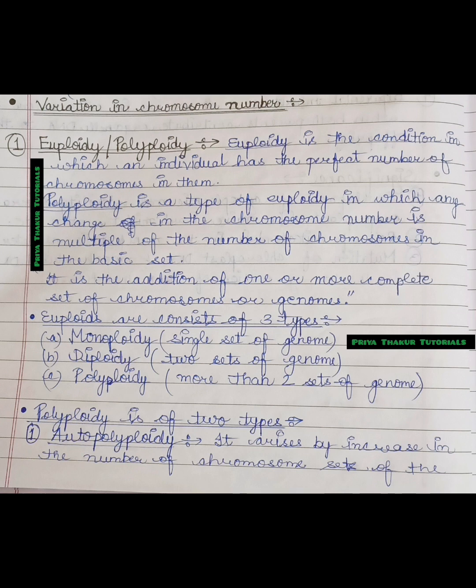Polyploidy is a type of euploidy. Polyploidy is a subtype of euploidy. Polyploidy is a type of euploidy in which any change in the chromosome number is multiple of the number of chromosomes in the basic set. It is the addition of one or more complete set of chromosomes and genomes.